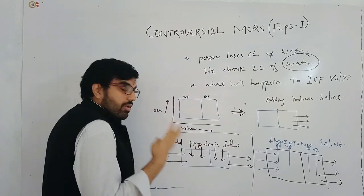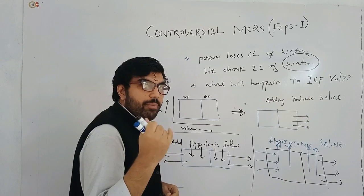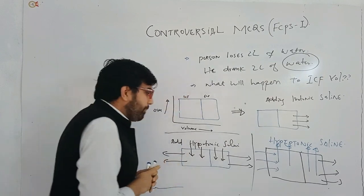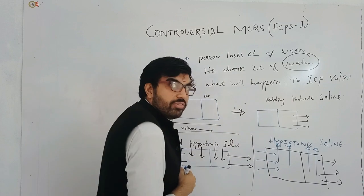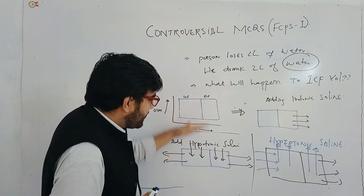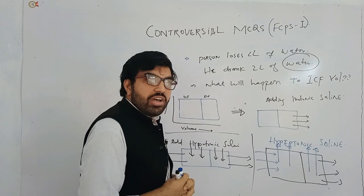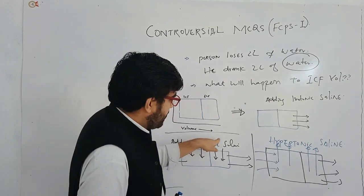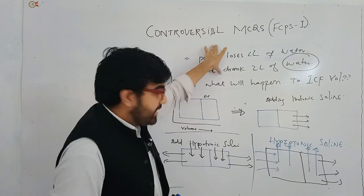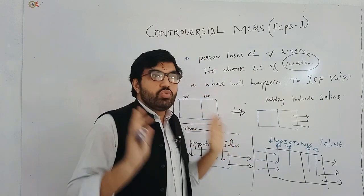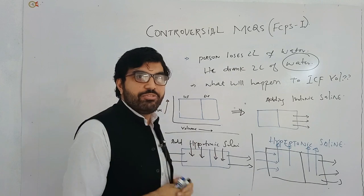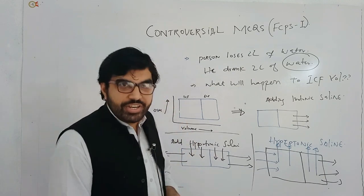The MCQ stem is the same but there are four possible options. If the question asks what will happen to intracellular fluid volume — it increases. If it asks about extracellular fluid volume — it increases. If it asks about osmolality of extracellular fluid — it decreases. And osmolality of intracellular fluid also decreases. By understanding the stem concept and memorizing the three diagrams, you can handle any trick made by CPSP.